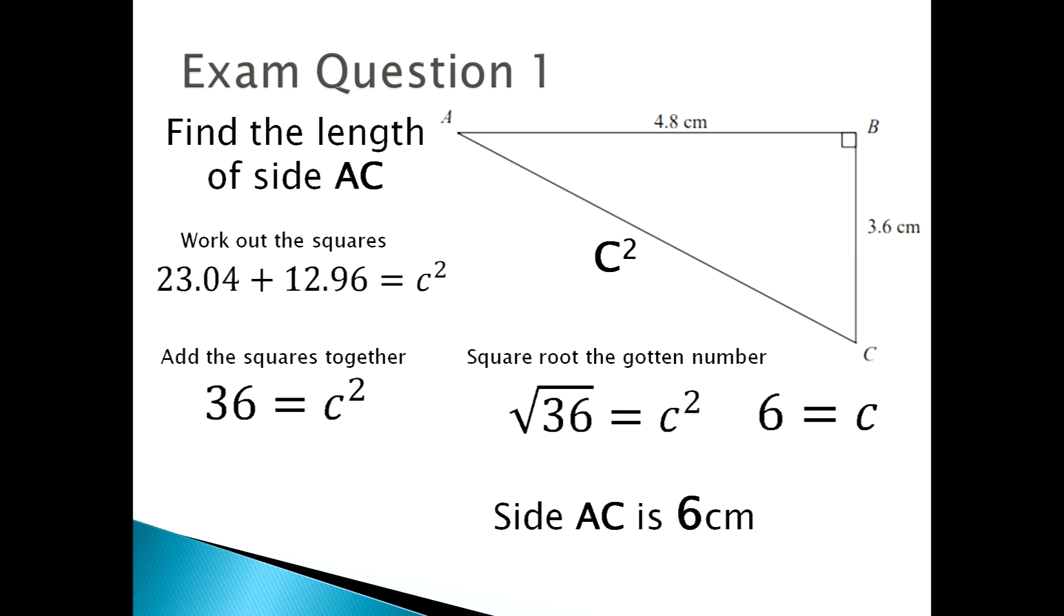Exam question 2. Find the length of side AB. I've labeled what we're looking for. This time we're looking for a squared. So we've been given the hypotenuse and we need to find the length of a side.